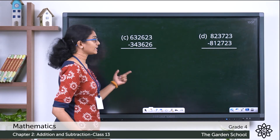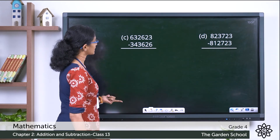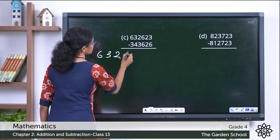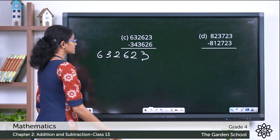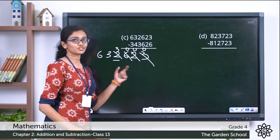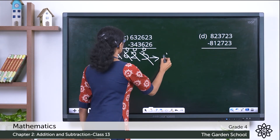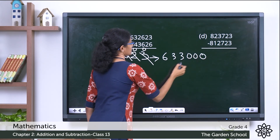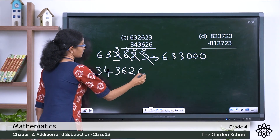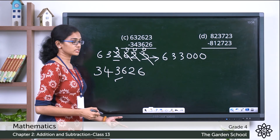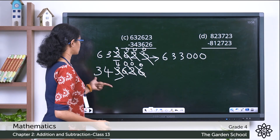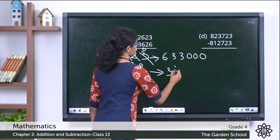Question C: six lakh thirty-two thousand six hundred twenty-three minus three lakh forty-three thousand six hundred twenty-six. Rounding the minuend 6,32,623 — the rounding digit is two, digit to the right is six, so two becomes three and places to the right become zeros: six lakh thirty-three thousand. Rounding the subtrahend 3,43,626 — the rounding digit is three, digit to the right is six, so three becomes four: three lakh forty-four thousand.